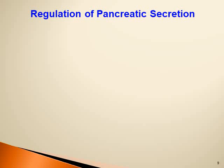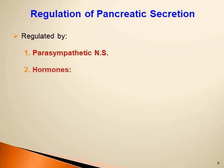Pancreatic secretion is regulated by the parasympathetic nervous system — parasympathetic activity stimulates pancreatic secretion — and by hormones. Two main hormones act on the exocrine pancreas, stimulating secretion of different qualities of pancreatic juice.